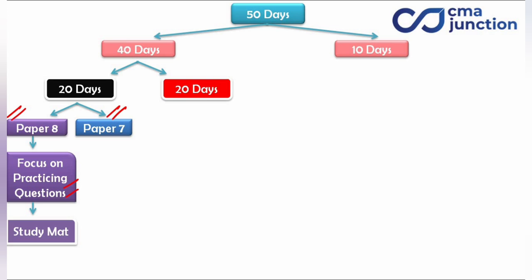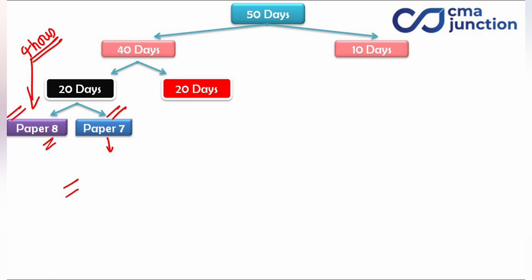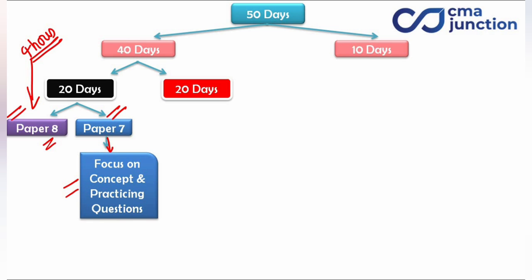Every day you have to give 8 hours. For these 20 days, give 4 hours to paper number 8 and 4 hours to paper number 7. Paper number 7 is Direct Taxation, which is a practical subject with many topics such as heads of income.